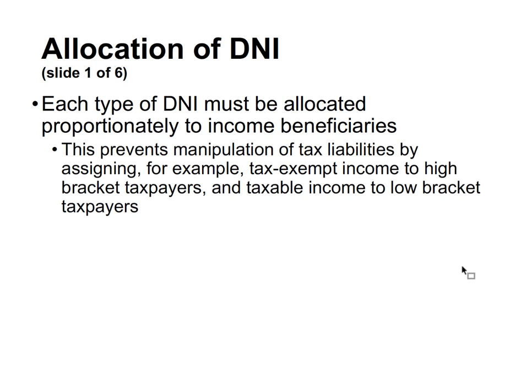How do we allocate distributable net income among parties? Each type of DNI must be allocated proportionally to the income beneficiaries. This prevents manipulation of tax liabilities — for example, you can't assign tax-exempt income to a high-bracket taxpayer and taxable income to a low-bracket taxpayer. This is very similar to the substantial economic effect requirements under partnership tax rules.